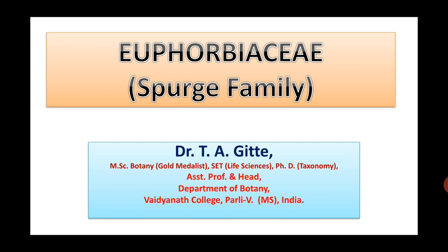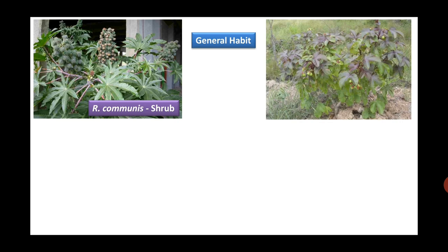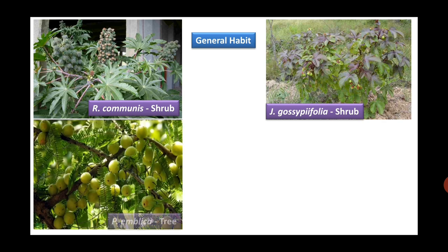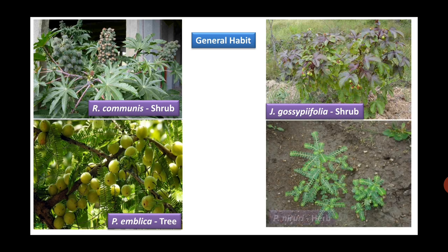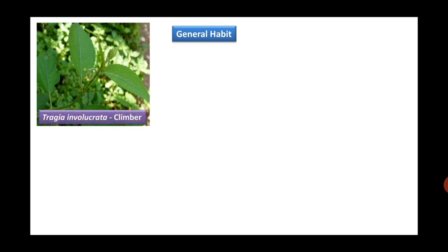Now let us study the general habit of Family Euphorbiaceae. This family comprises mostly shrubs like Ricinus communis and Jatropha gossipifolia, or trees like Phyllanthus emblica, that is the famous Indian gooseberry. Phyllanthus niruri is a herb. Tragia involucrata is a climber.